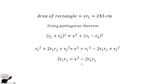Now we add 2r1r2 to both sides of the equation and we get 4r1r2 = x². From here we can make x the subject from the area equation and insert it into this equation to find the remaining value.